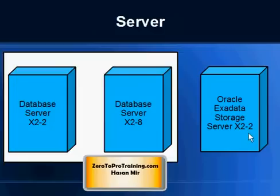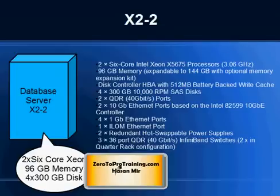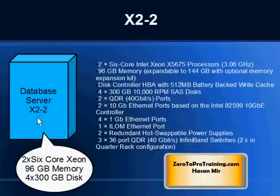For the storage server, you will get the X2-2 configuration. X2-2 and X2-8 are simply names for the machines in the package. They depend on the configuration and are just labels for the specific hardware included in the Exadata cluster you're purchasing.